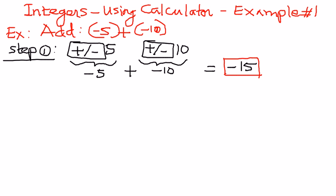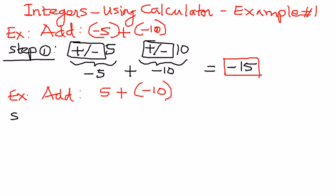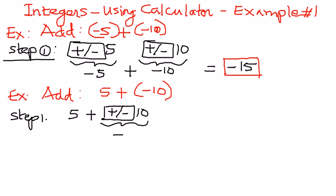Let's look at another example. This time, we want to add a positive 5 plus a negative 10. As step 1, you just enter 5 as is. Then, to enter negative 10, you're going to use the positive/negative button and then enter 10, and the calculator will display negative 10. So, 5 plus negative 10 is equal to negative 5 — the calculator will display negative 5 as the result.